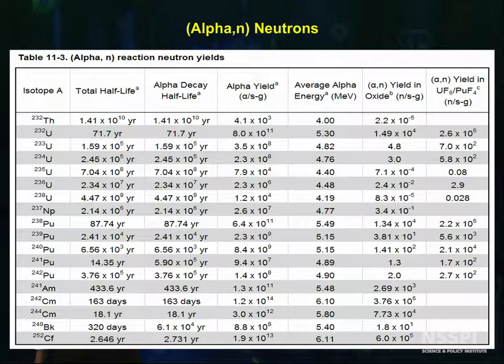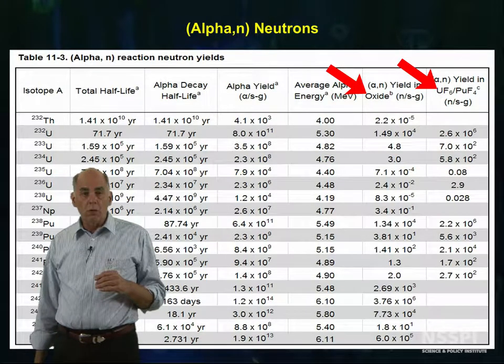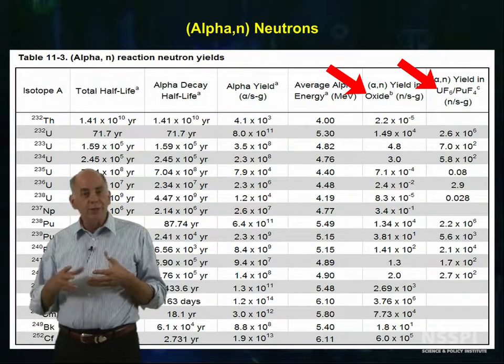This table gives the yields for alpha-N reactions in various matrices. Because the range of the alpha is so short, the yield is sensitive to how the matrix is formed.